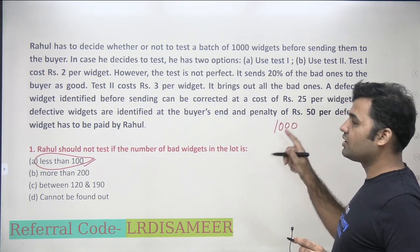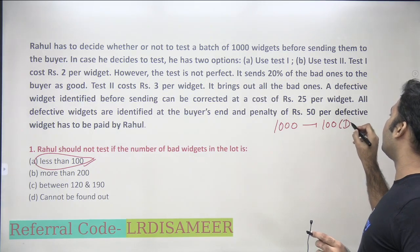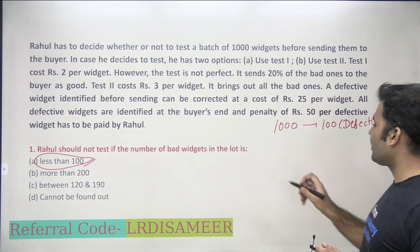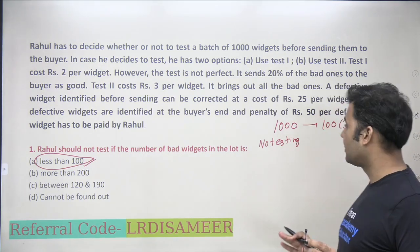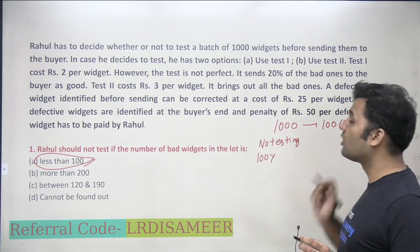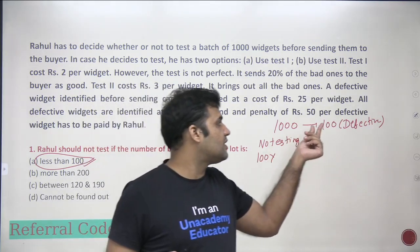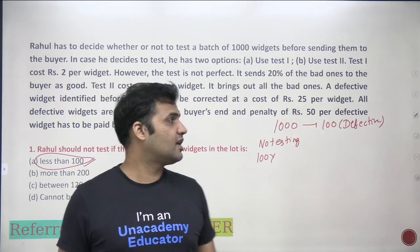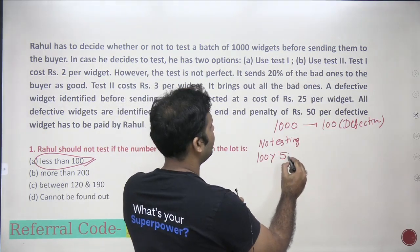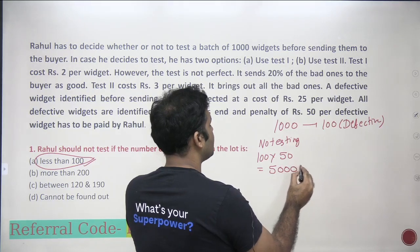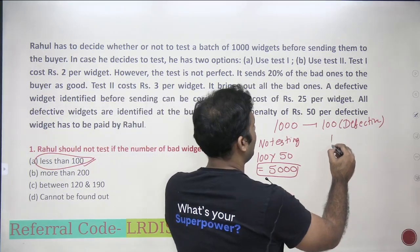Let's take 100 defective widgets as our example. If Rahul chooses no testing, he sells all 1000 widgets including the 100 defective ones. When buyers identify those 100 defective items, they charge a penalty of 50 rupees each. So 100 × 50 = 5000 rupees — in this case Rahul will be spending 5000 rupees as penalty.